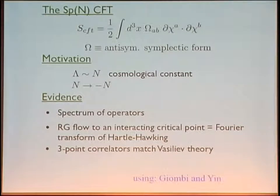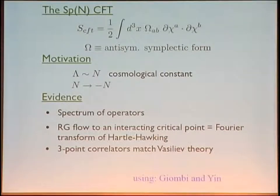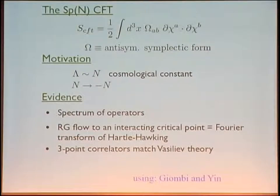In conclusion, if this duality is correct, it raises the possibility of using higher spin gravity as a toy model for quantum cosmology — an exactly solvable theory of quantum gravity in de Sitter space. It is only a toy model because higher spin theory has an infinite tower of massless higher spin fields and there is no known limit giving ordinary gravity in four dimensions.